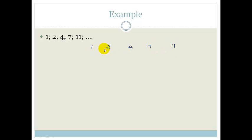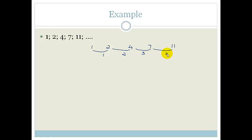If I look at the common difference between these: 2 minus 1 is 1, 4 minus 2 is 2, 7 minus 4 is 3, and 11 minus 7 is 4. This would be called the first difference.